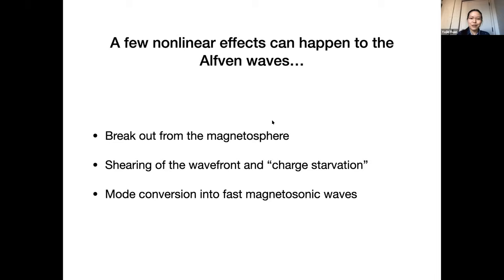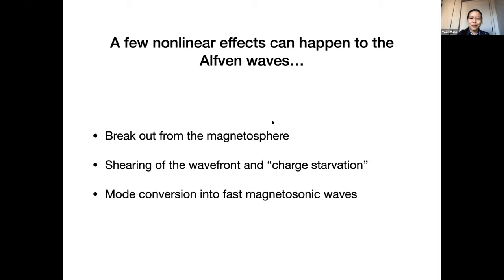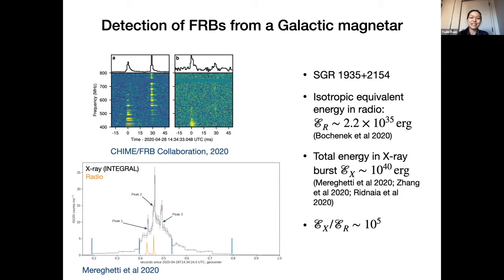These Alfvén waves can have very interesting nonlinear effects leading to interesting observational features. Today I will talk about three examples. I'll start with the case where an Alfvén wave nonlinearly breaks out from the magnetosphere — which we think could produce fast radio bursts from the galactic magnetar. Fast radio bursts are millisecond duration, very bright radio bursts of cosmological origin — still a mysterious phenomenon. With CHIME and other telescopes we are detecting more and more, but their nature is still unclear.